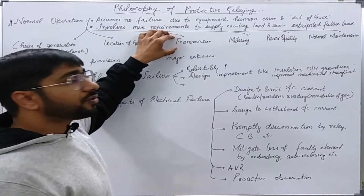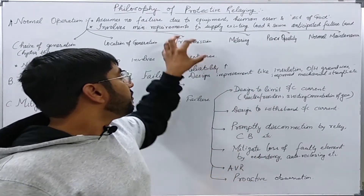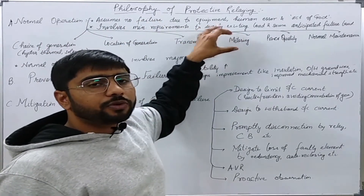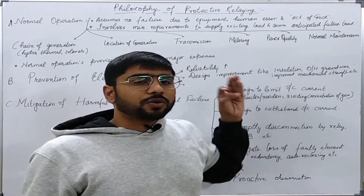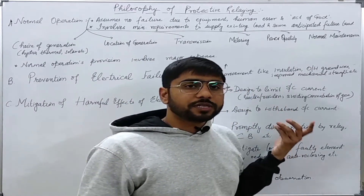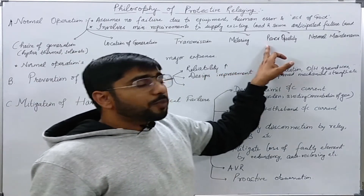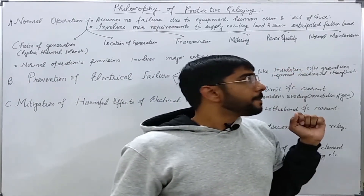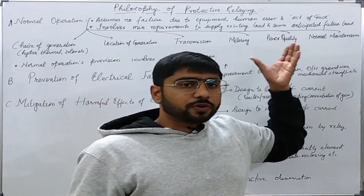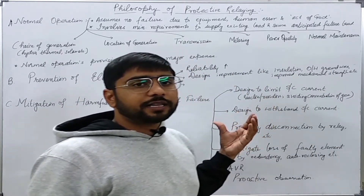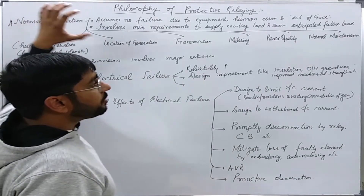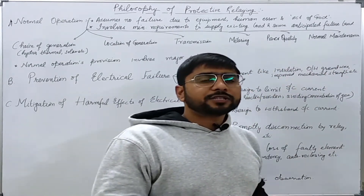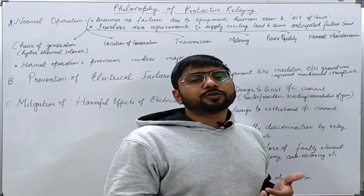We should also try to make provisions for metering various parameters of the power system — like load delivered, power generated, power delivered, losses, voltage, and frequency. We should also monitor power quality, which mainly refers to voltage and frequency, as well as factors like total harmonic distortion. The design for normal operation should also cater for normal maintenance practices without causing any disruption to the system.